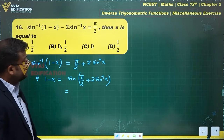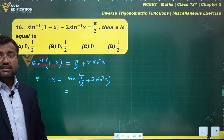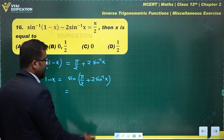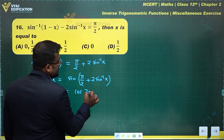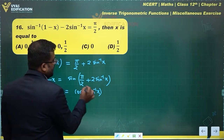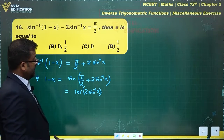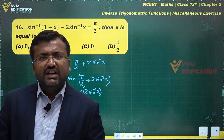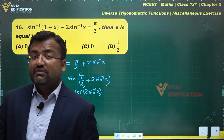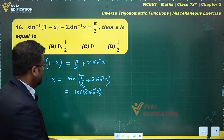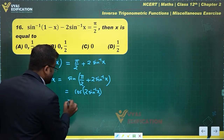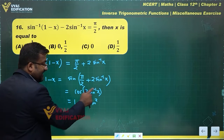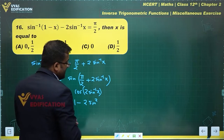What's the benefit of this? sin(π/2 + θ) is in the second quadrant, so sin(π/2 + θ) = cos θ. So this becomes cos(2sin⁻¹(x)). Now cos(2θ) equals cos²θ - sin²θ, or equivalently 1 - 2sin²θ.